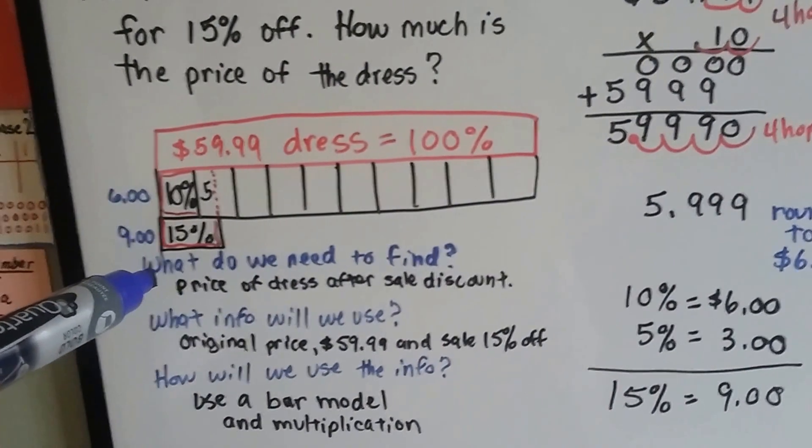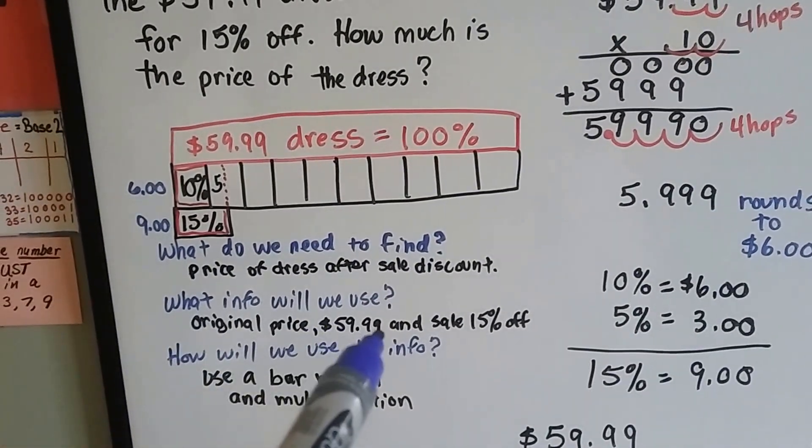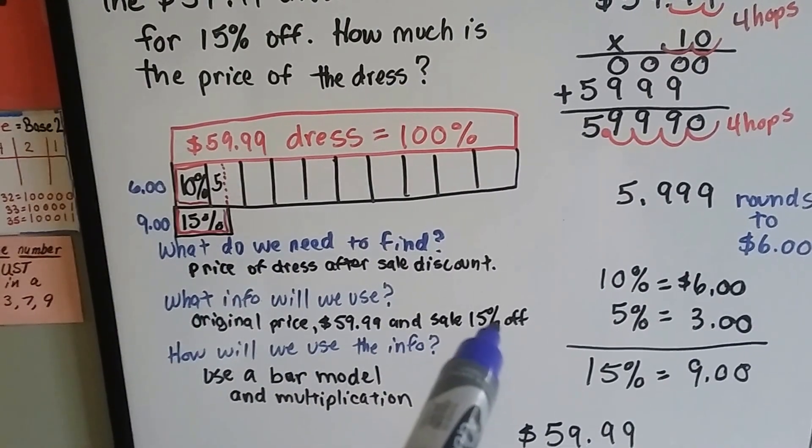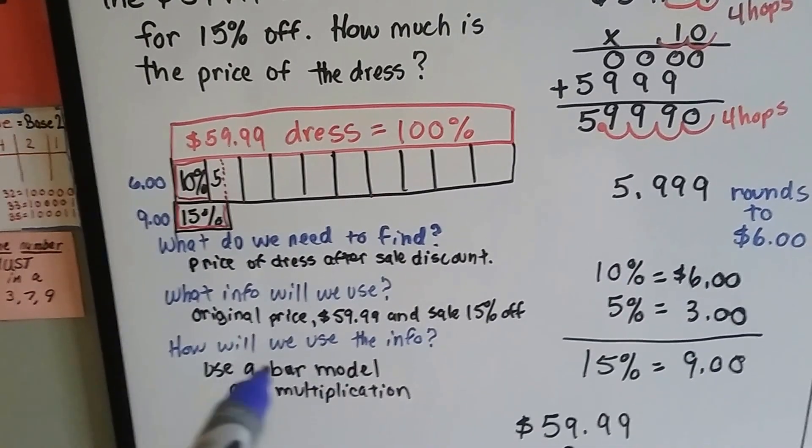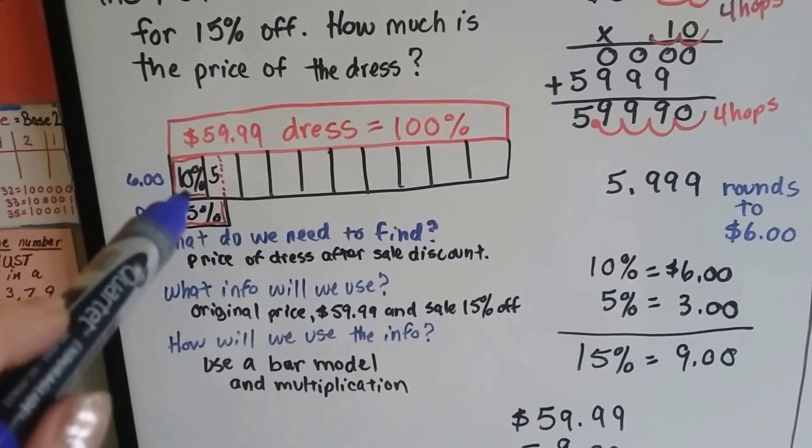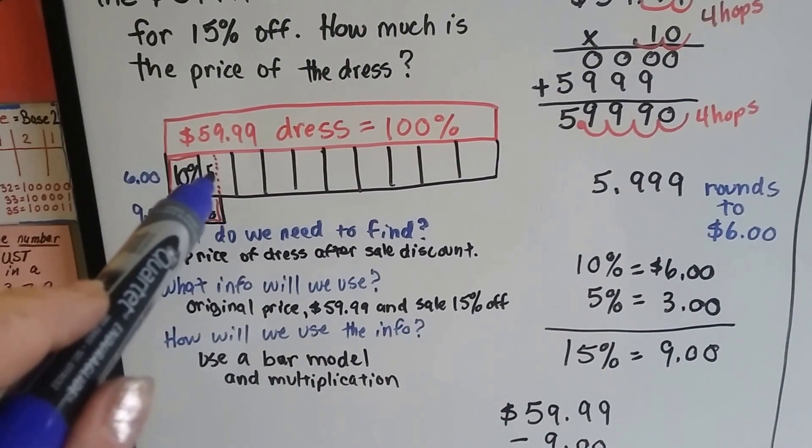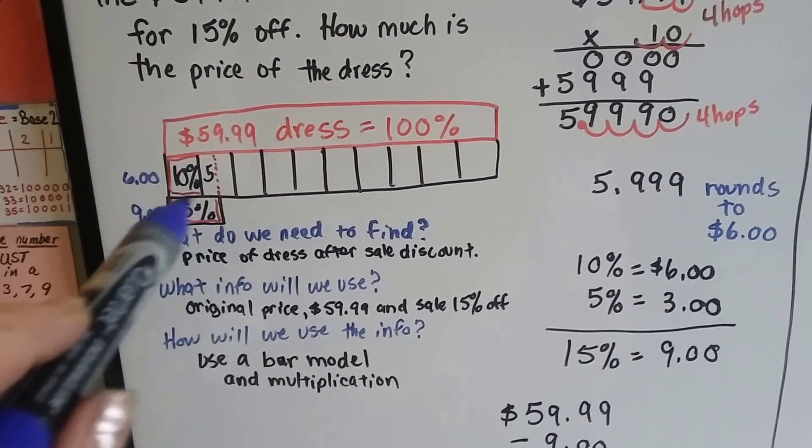What we needed to find was the price of the dress after the sale discount, and we used the original price, the $59.99, and the 15% off, and we used a bar model and multiplication to help us solve it. Knowing what 10% is, it was easy to figure out another 5% to make the 15%.